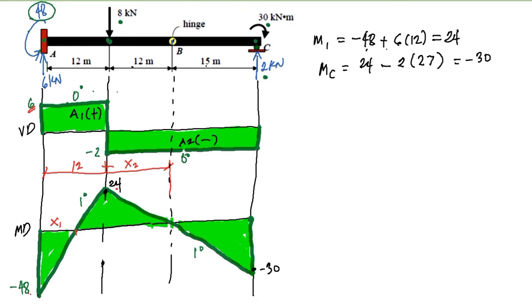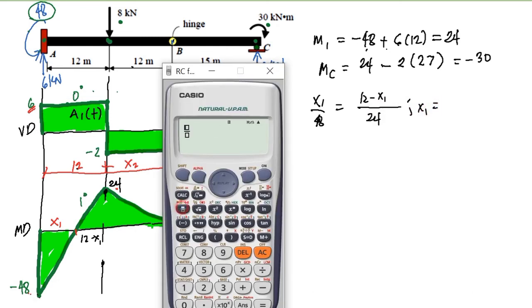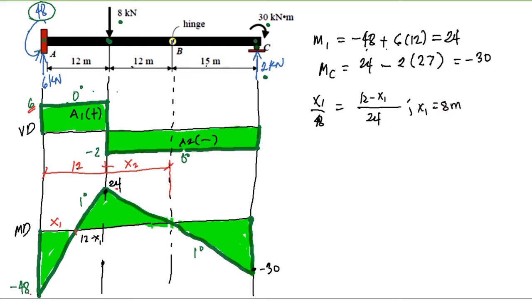For x sub 1, using ratio and proportion: x1 over 48 equals (12 minus x1) over 24. Solving for x1: x1 over 48 equals (12 minus x1) over 24. Shift solve equals, we get 8. So this is 8 meters from point A on the left.